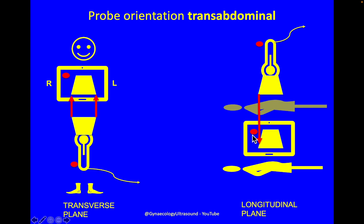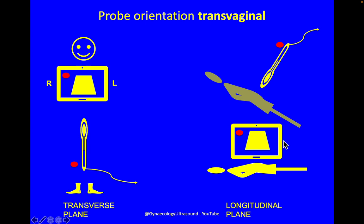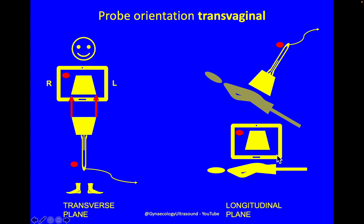In the longitudinal plane, the head end of the patient is displayed on the side of the marker and the feet end is displayed on the other side of the screen. It's exactly the same transvaginally. If you have the probe with the marker toward the left, then you get a right-left side like you do transabdominally. And transvaginally, if you have the marker at the top, then the head end of the patient is displayed here and the foot end is displayed there.